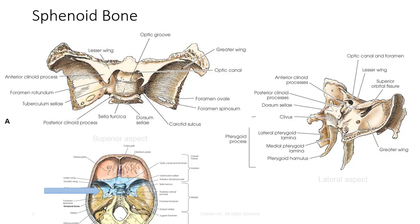The greater wings arise from the sides of the body and curve laterally, posteriorly, anteriorly, and superiorly to form the middle cranial fossa and the posterior lateral walls of the orbits. Three paired foramina are situated on the greater wings: the foramen rotundum, foramen ovale, and foramen spinosum. Pterygoid processes arise from the lateral portions of the inferior surface of the body and medial portions of the inferior surfaces of the greater wings. The pterygoids articulate with the palatine bones anteriorly and the vomer as part of the nasal cavity.